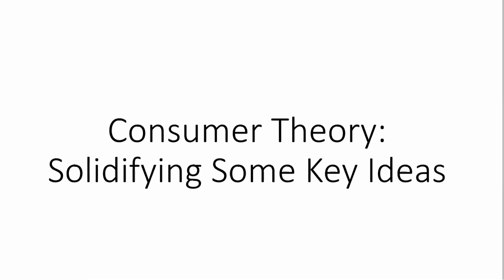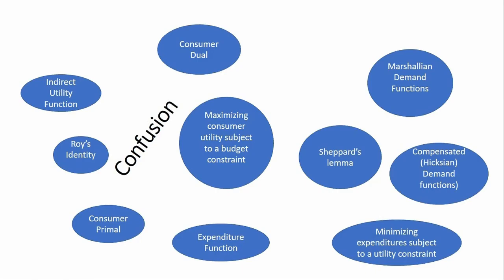Hello, in this video we're going to look at consumer theory by trying to bring together several key ideas. There's a lot of things going on here that brings confusion: indirect utility functions, Roy's identity, Shepard's lemma, expenditure functions, the consumer's dual problem, the consumer's primal problem, compensated demand functions, Hicksian demand, Marshallian demand, and so on. So I want to try to bring this all together.